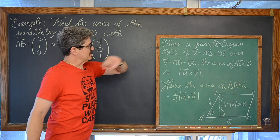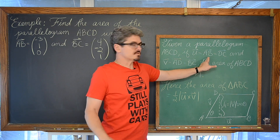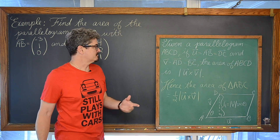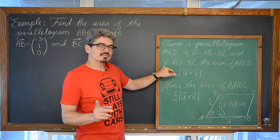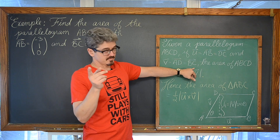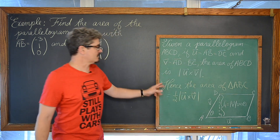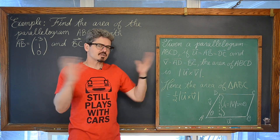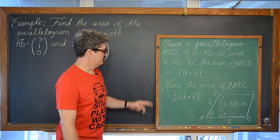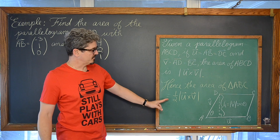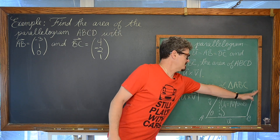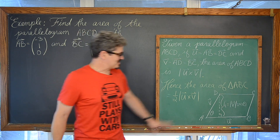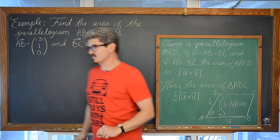Given a parallelogram ABCD, if vector U equals vector AB which equals vector DC — the opposite sides are congruent and parallel — and vector V equals vector AD which equals vector BC, then the area of your parallelogram is simply the magnitude of your vector cross product. The area of triangle ABC is just half of that — if you cut this parallelogram in half, you have the area of a triangle. This is a summary of that diagram from the previous page of notes.